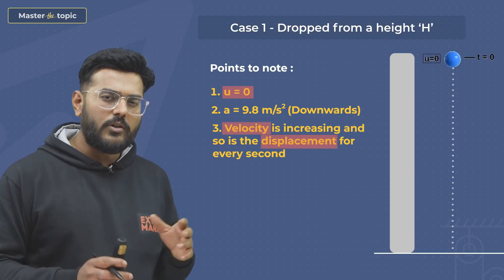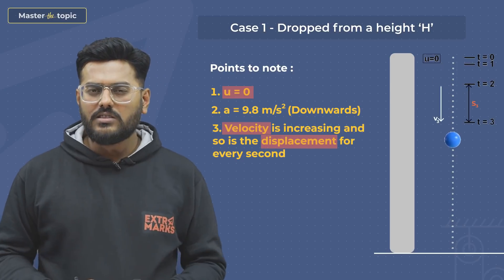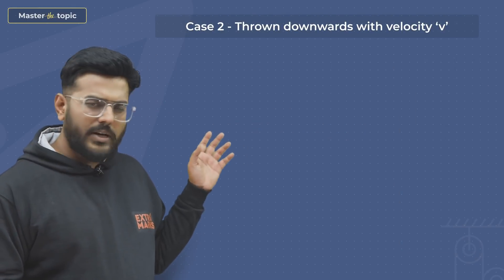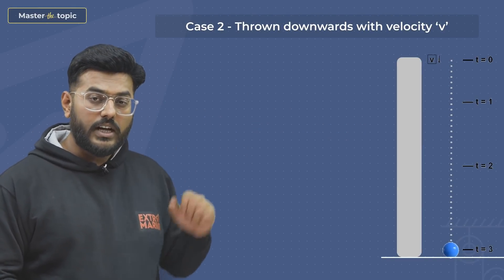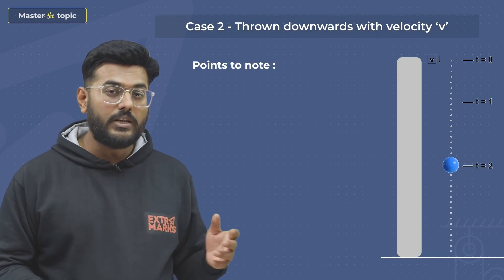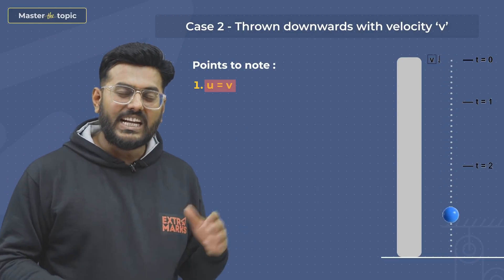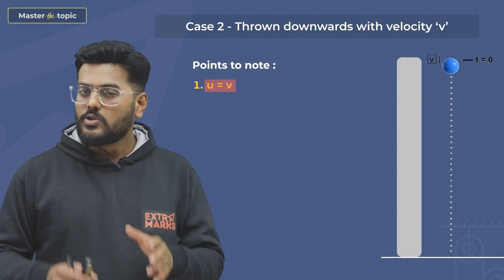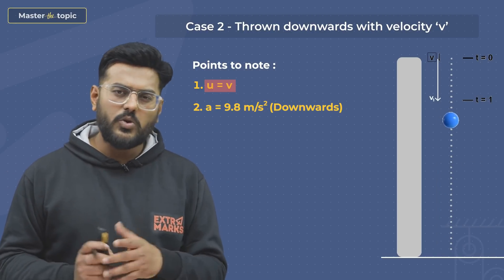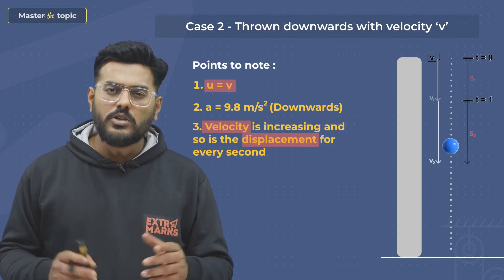For Case 2, I am going to throw the ball in the downward direction. Now the change is that the ball has an initial velocity equal to v. As you can see, the ball moves at a faster pace because it has an initial velocity. The acceleration here will be in the downward direction, and it will keep on increasing that initial velocity. Its velocity and displacement will keep on increasing with every second that passes.